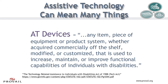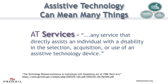Assistive technology can mean many things. The following definitions come straight out of the Technology-Related Assistance to Individuals with Disabilities Act, or Tech Act, of 1988. AT devices are any item, piece of equipment, or product system, whether acquired commercially off-the-shelf, modified, or customized, that is used to increase, maintain, or improve functional capabilities of individuals with disabilities. AT services are any service that directly assists an individual with a disability in the selection, acquisition, or use of an assistive technology device.